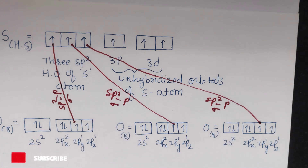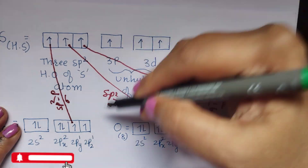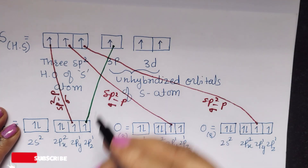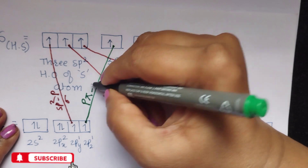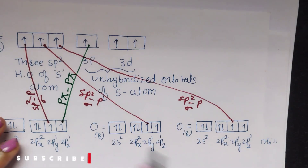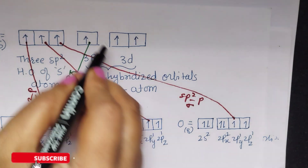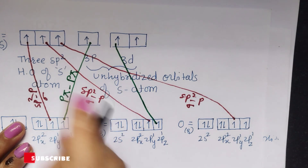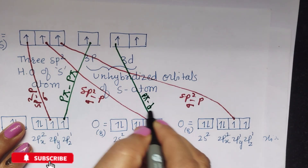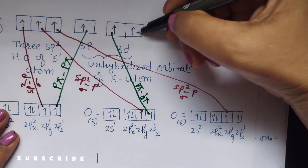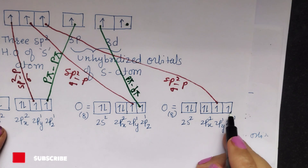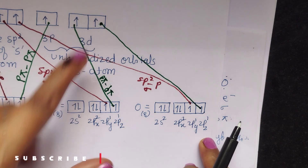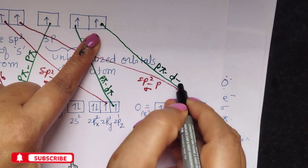Now let us see the formation of the pi bonds. The unhybridized p orbital overlaps with the p orbital of the first oxygen, giving a p-pi–p-pi bond. The next unhybridized d orbital overlaps with the p orbital of the second oxygen, giving a p-pi–d-pi bond. Similarly, the last unhybridized d orbital overlaps with the third oxygen's unpaired electron, giving another p-pi–d-pi bond.